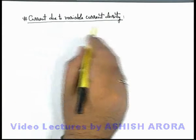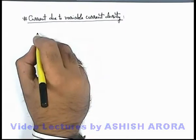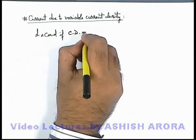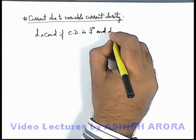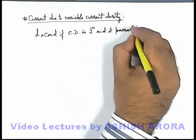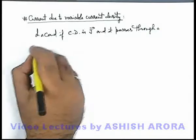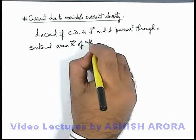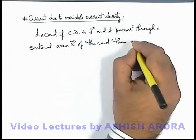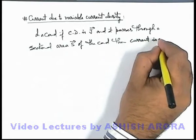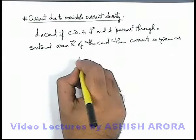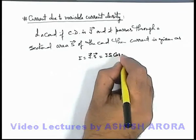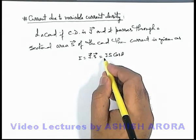Let's discuss current due to variable current density. We have just now discussed that in a conductor, if current density is J vector and it passes through a sectional area S vector of the conductor, then current is given as I = J dot S, or it can be written as J S cos theta, where theta is the angle between the current density vector and the area vector.